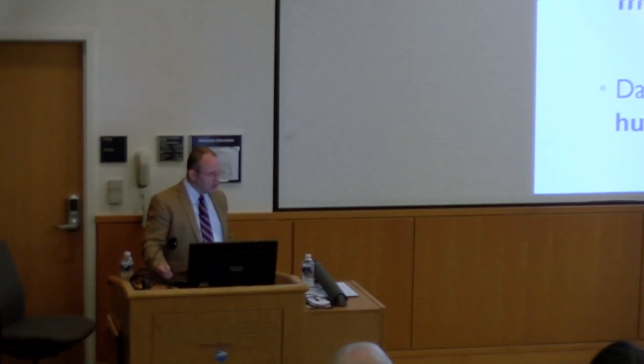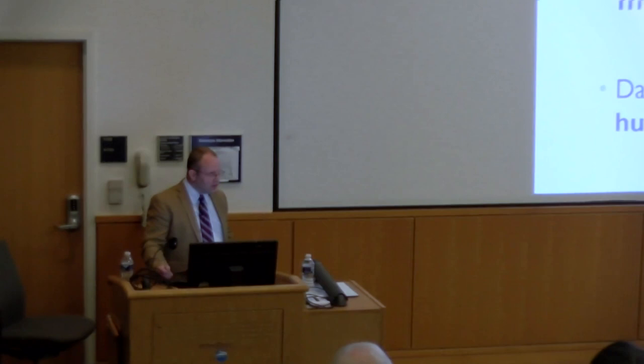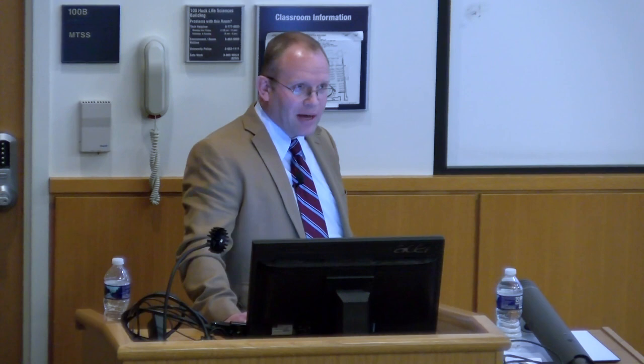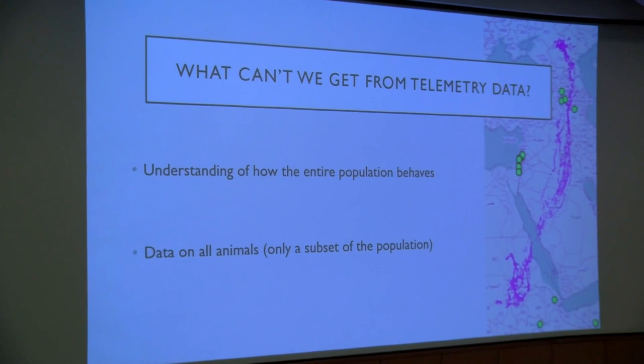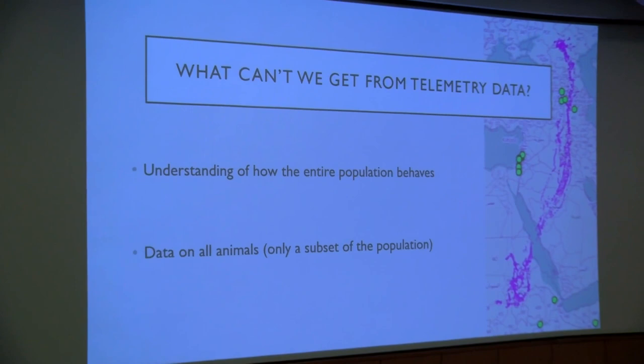From telemetry data, we get tracks from individual animals, giving us fine-scale information about their movement choices, which tells us a lot about the ecology of an animal. This data is collected remotely, from places we can't follow. However, we don't get everything — in particular, we don't get an understanding of how the entire population behaves, because studies are conducted on only a small group of animals. One theme of today is pairing individual tracking data with additional information to understand population-level processes.